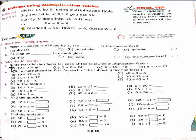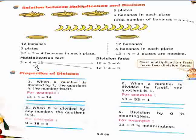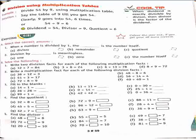Now comes Part B. Solve the following. First question: write two division facts for each of the following multiplication facts. Part A is 12 multiply 7 equals 84. Just as we wrote division facts for 3×4=12, the two division facts are: 84 divided by 7 equals 12, and 84 divided by 12 equals 7.